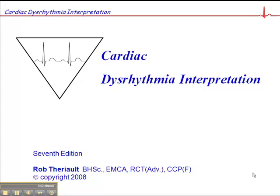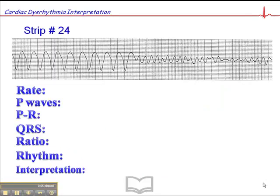This is ECG exercise number 24 on page 96. This is a bit of a chaotic rhythm. Here we have a heart rate of approximately 210 initially, about 210 beats per minute. And then it suddenly deteriorates into this chaotic rhythm down here.